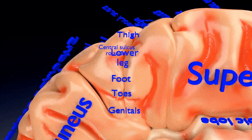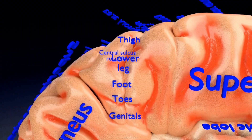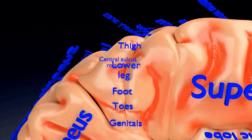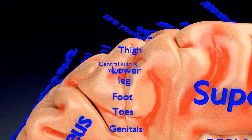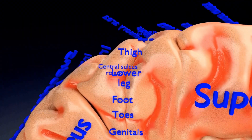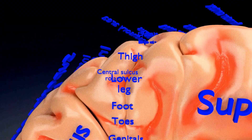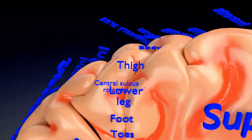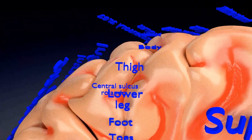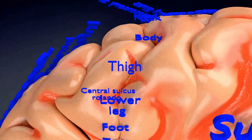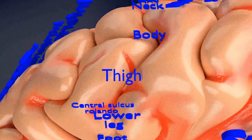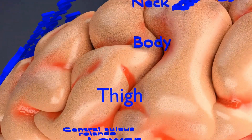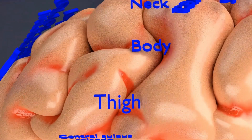As you can see, the genitals, toes, foot, and lower leg are represented at the medial surface of the cerebral hemisphere. Moving down the hemisphere, progressively higher parts of the body are represented, assuming a body that is faceless and has arms raised.